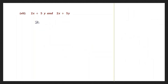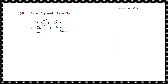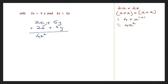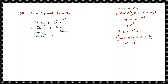Question 8: 2x plus 5y into 2x plus 5y again. First we multiply 2x into 2x: take the numbers — 2 into 2 — and x into x — so 2 twos are 4 into x to the power of 1 plus 1, which is 4x squared. Let's write 4x squared. Now 2x into plus 5y: 2 into 5 into x into y — 2 fives are 10xy — so we have plus 10xy.